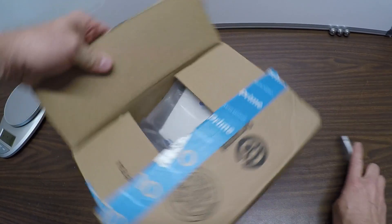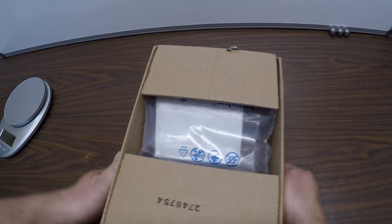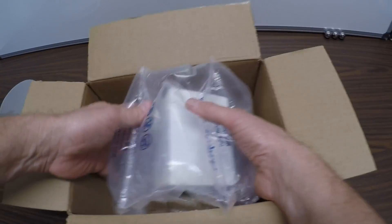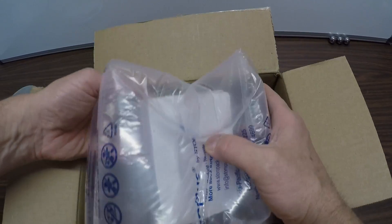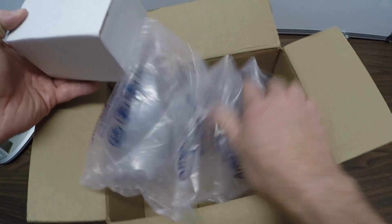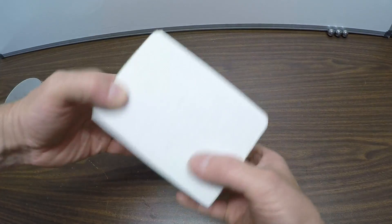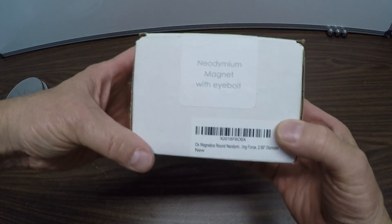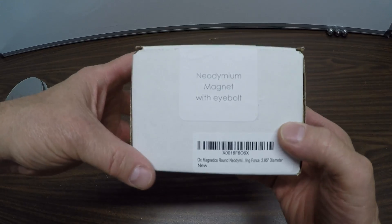We'll open it up, see what's inside, how it's packed. This came rather quickly. You can get them all sorts of different sizes. Standard bubble wrap, nothing really special that just keeps it from bouncing around I guess. Okay goodbye box. Here we have the neodymium magnet with eye bolt.